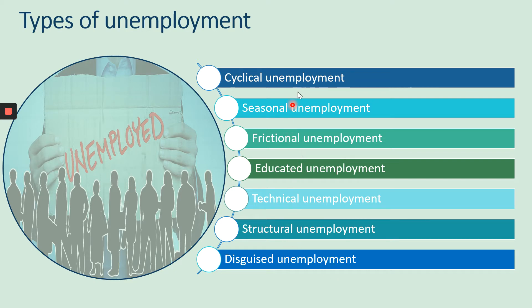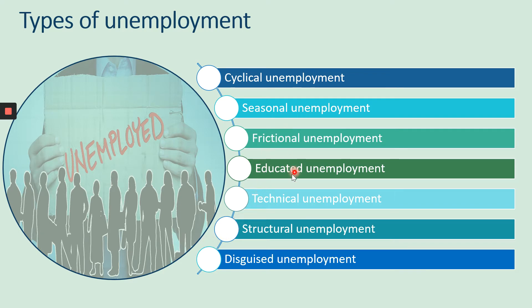For a two-mark question, if they ask you to list down the types of unemployment, you just need to number and write all seven types. For a three-mark question, they might ask you to write about one specific type, like cyclical unemployment or disguised unemployment. For a five-mark question, you may need to write all seven types, or sometimes they'll ask you to explain any four types — in that case you can select any four.